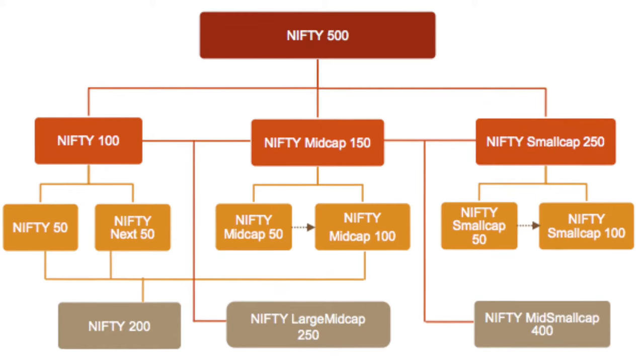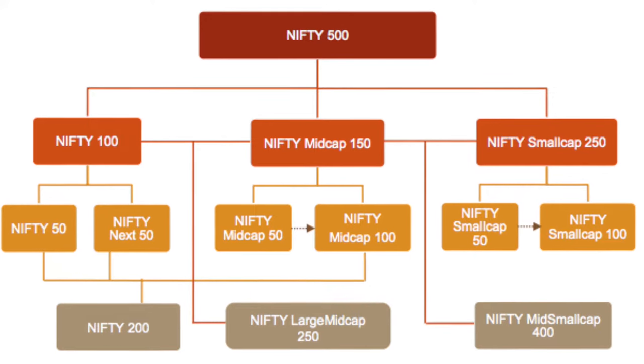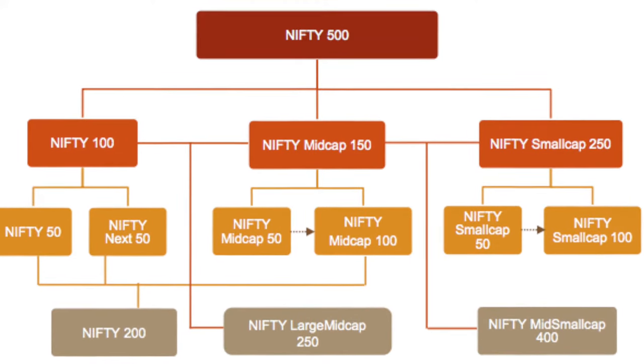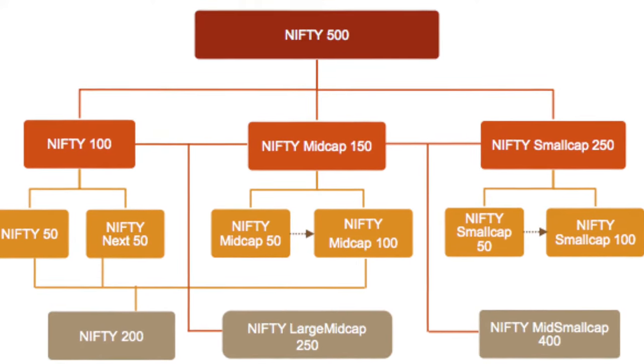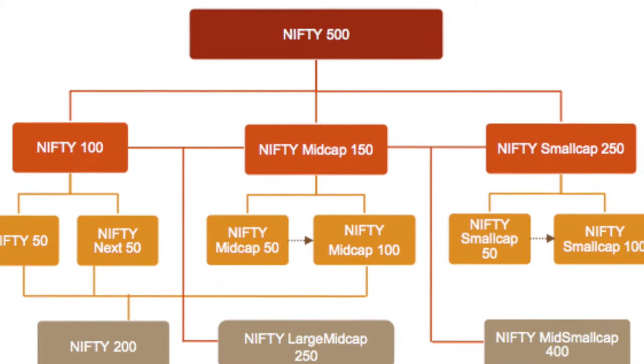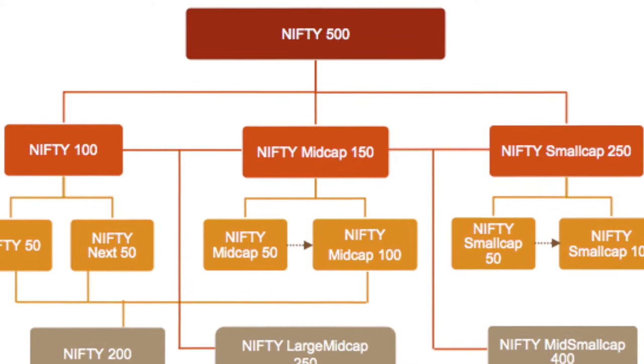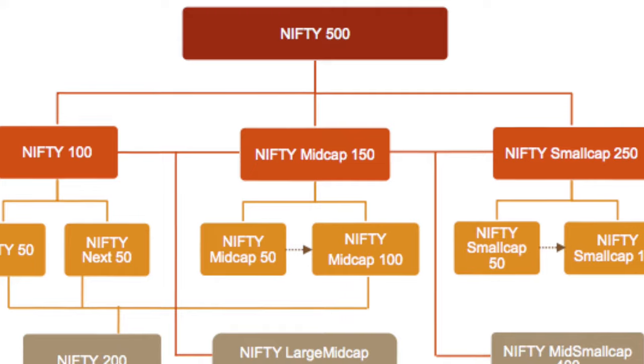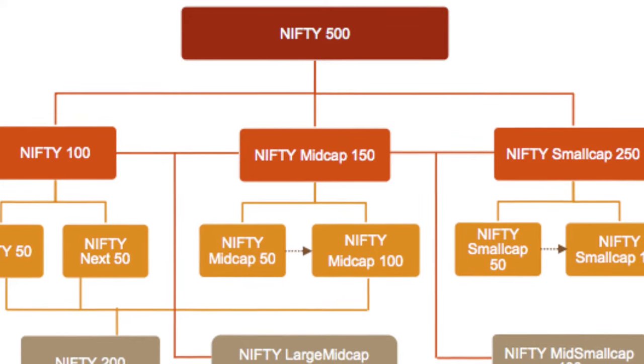Now let's look at different indexes. There is also a category called flexi cap, which includes small cap, mid cap, and large cap together. In India, the Nifty 500 index covers the top 500 companies — the first companies are large cap, 100 are mid cap, and 250 are small cap. There is also a mid cap index, small cap index, and large cap index.